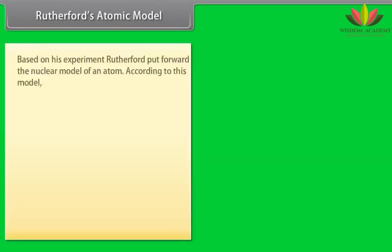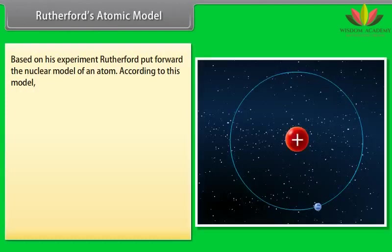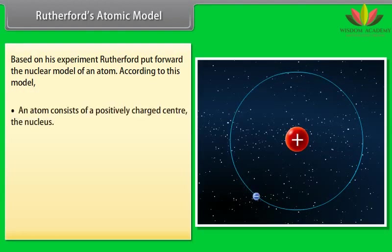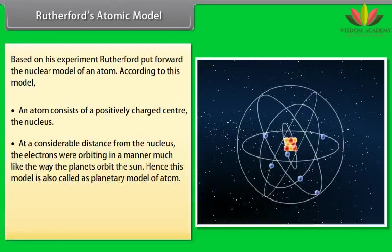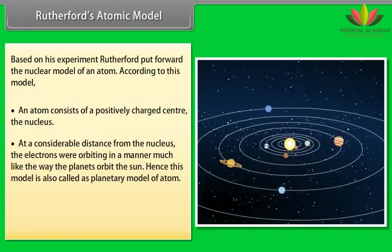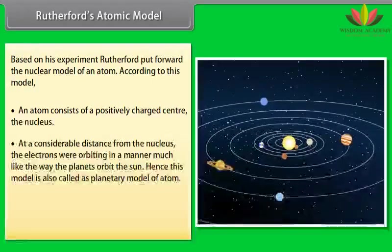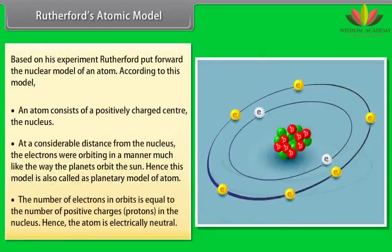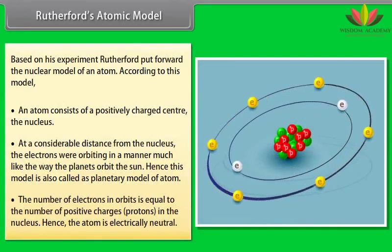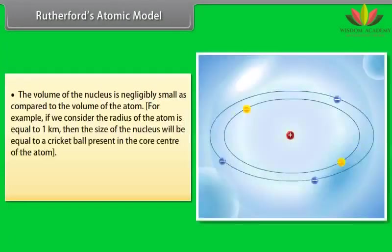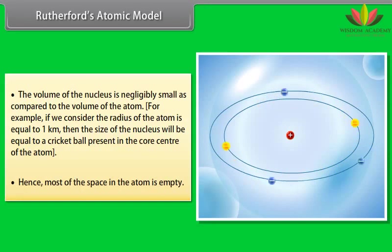Rutherford's Atomic Model. Based on his experiment, Rutherford put forward the nuclear model of an atom. According to this model, an atom consists of a positively charged center, the nucleus. At a considerable distance from the nucleus, the electrons were orbiting in a manner much like the way the planets orbit the sun. Hence, this model is also called as planetary model of atom. The number of electrons in orbits is equal to the number of positive charges, protons, in the nucleus. Hence, the atom is electrically neutral. The volume of the nucleus is negligibly small as compared to the volume of the atom. For example, if we consider the radius of the atom is equal to 1 km, then the size of the nucleus will be equal to a cricket ball present in the core center of the atom. Hence, most of the space in the atom is empty.